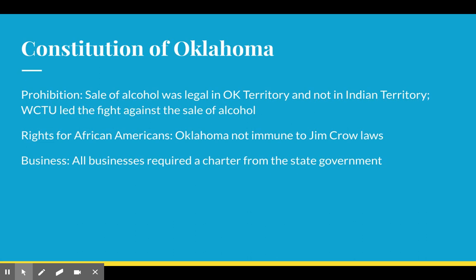Again, Oklahoma is not immune to Jim Crow. There is legal segregation, and business requires a charter from the state government — you need licenses and things like that. This is becoming relevant today with the governor's pandemic update, where people who don't abide by some of the rules could have their charters, business permits, and licenses revoked from the state, because you have to go to the state to get a license to own a business in Oklahoma.